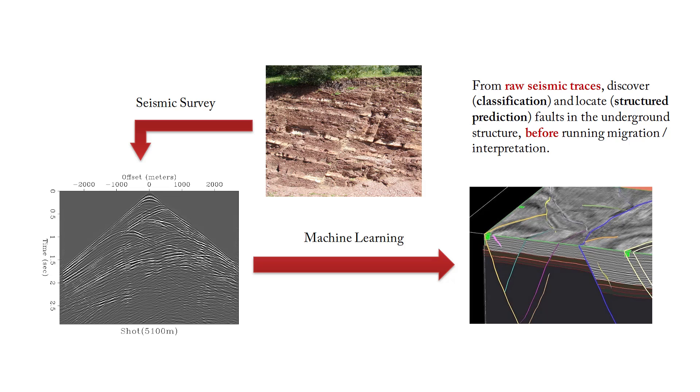I'm working on a machine learning and computational neuroscience project. We're trying to do geophysical feature detection with machine learning algorithms. The problem we're trying to attack is computing a mapping from the raw seismic traces to the representation of geological features. There is some previous work trying to do automatic feature detection based on migrated seismic images, but what we are doing is we bypass the migration stage and go directly from the raw seismic traces to key feature detections.